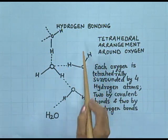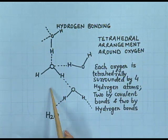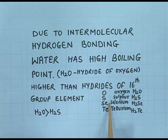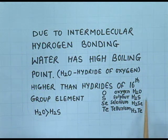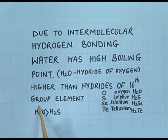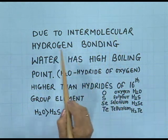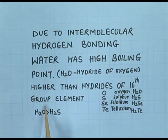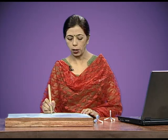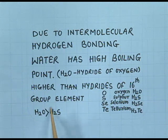This extensive hydrogen bonding in water is responsible for its very high boiling point. The group 16 elements — oxygen, sulphur, selenium, and tellurium — form compounds H2O, H2S, H2Se, and H2Te. The unusual properties of water are due to intermolecular hydrogen bonding. The unusually high boiling point of water compared to H2S and the fact that water is liquid at room temperature while H2S is a gas are both due to intermolecular hydrogen bonding.